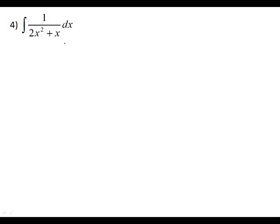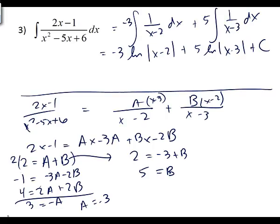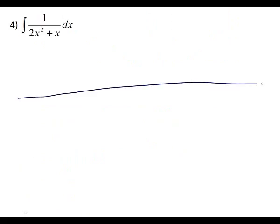Why doesn't everybody try number four right now? If you don't have anything to do, try number four. How do you factor that again? Two x squared plus x — you take out an x: x times two x plus one. So you have one over x and one over two x plus one.